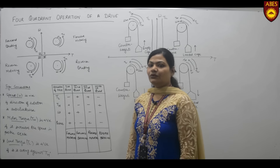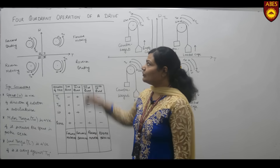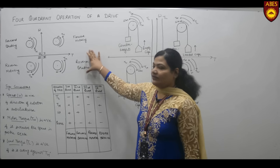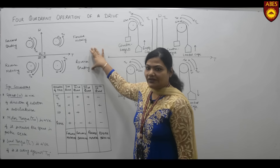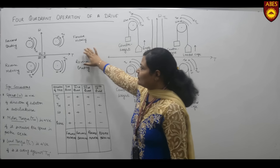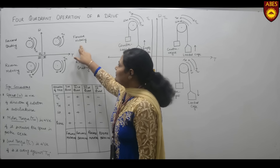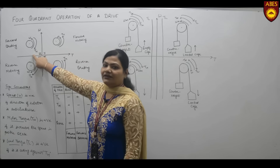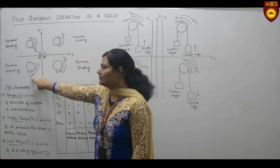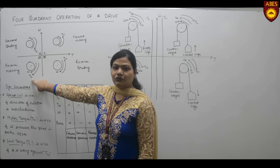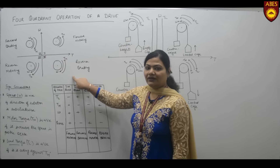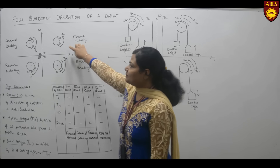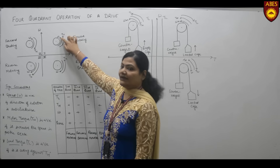Hello everyone, today I am going to discuss four quadrant operation of a drive. This is a four quadrant design of a drive. This is the first quadrant, which is a forward motoring mode. This is the second quadrant, that is a forward braking mode. The third is a reverse motoring mode, and this is the fourth quadrant, that is a reverse braking mode.